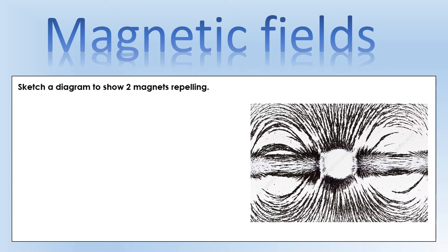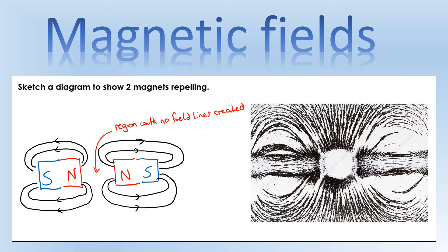What if they are repelling? On the diagram we create this region with pretty much nothing in between them. I've done it with a north pole and a north pole — I could equally have done this with a south pole and a south pole. Essentially they push each other's fields away, creating this region with no field lines in the middle. That's what's creating the repulsion — the field lines pushing each other apart. If we had south poles pointing at each other it would be the same, but we need to show field lines going from north to south.